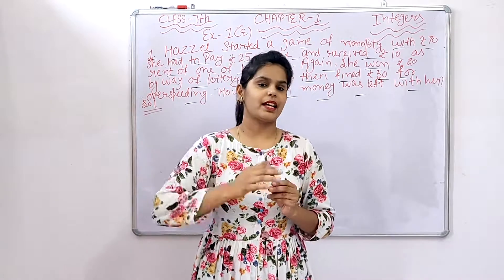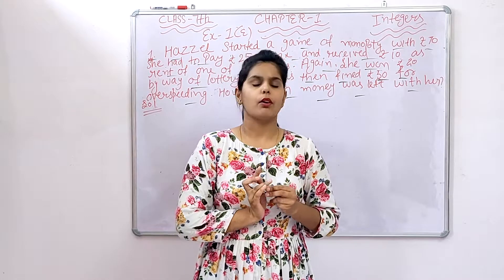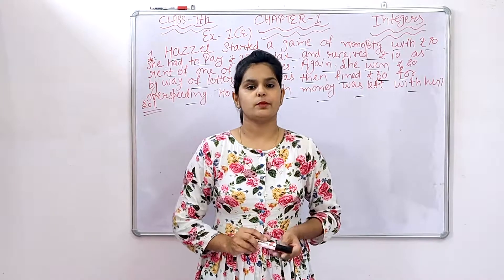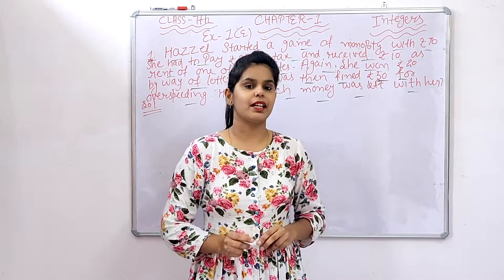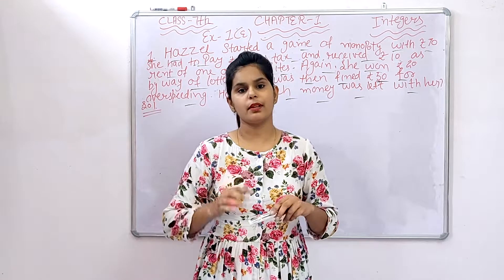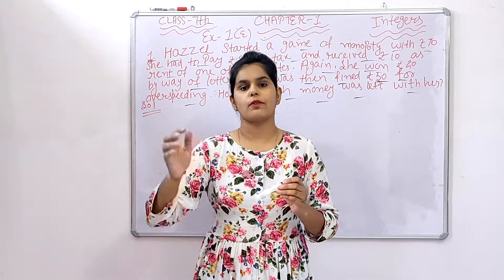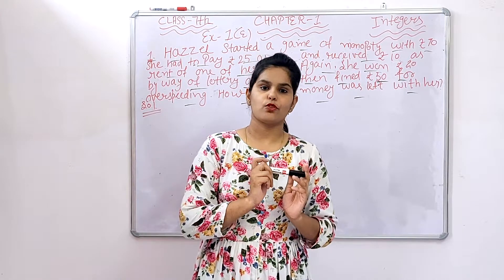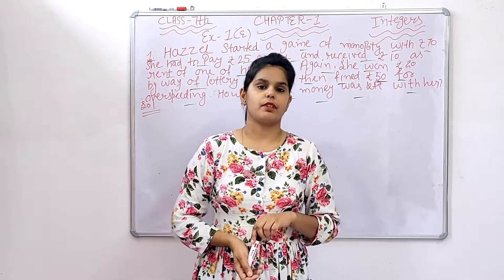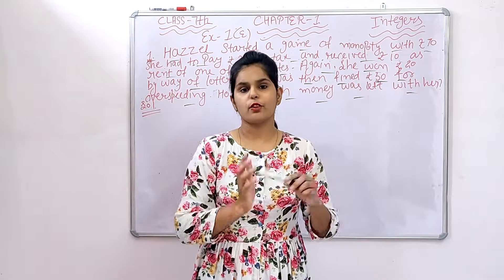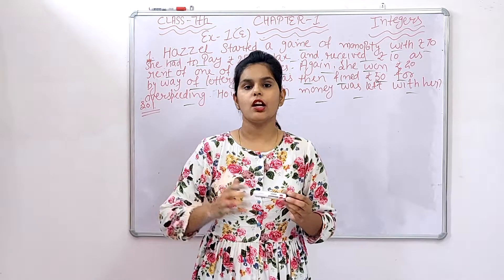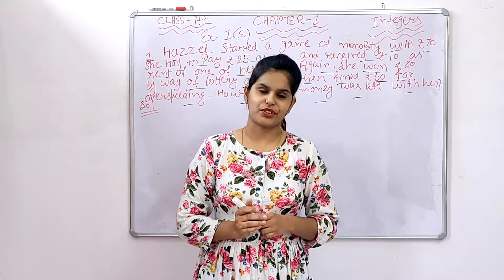So, what do we have? She started with Rs. 70. This is a simple concept — the money we receive, we take as positive, and the money we pay out, we take as negative. For example, if we have Rs. 10 and we have to give Rs. 5, we calculate 10 minus 5 and are left with Rs. 5. So money paid is negative and money received is positive.